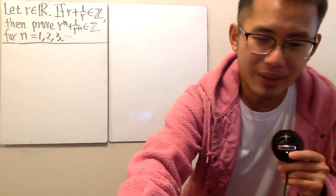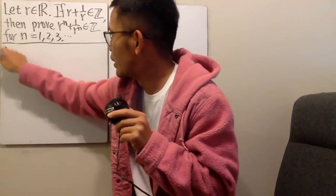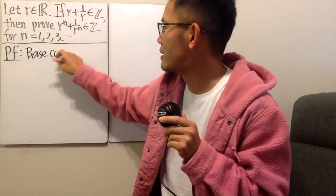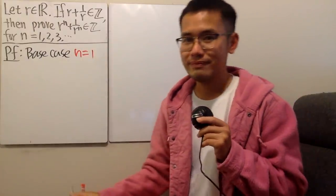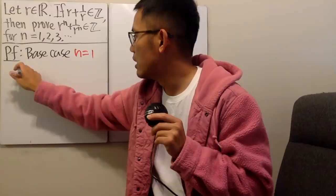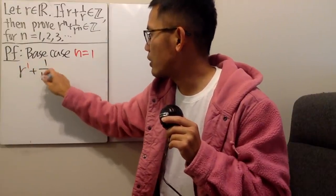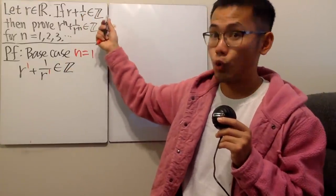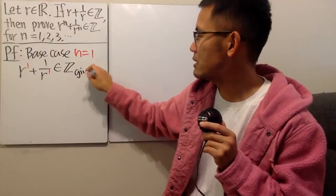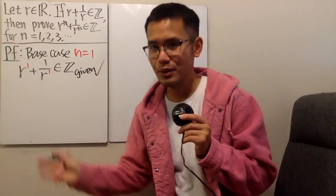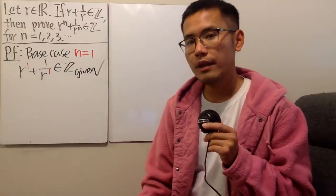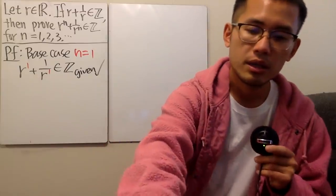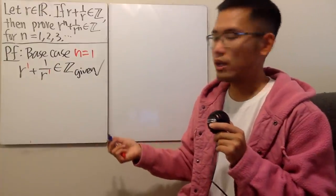All right. Now let's go ahead and do our inductive proof. The first thing is that you write down proof. Base case — the most wonderful thing in the world because it's the easiest. Base case when n equal to 1: you put 1 in here, so you are looking at r to the first power plus 1 over r to the first power. This is already given to be true. And if you think this is too obvious, you can also check when n equal to 2.